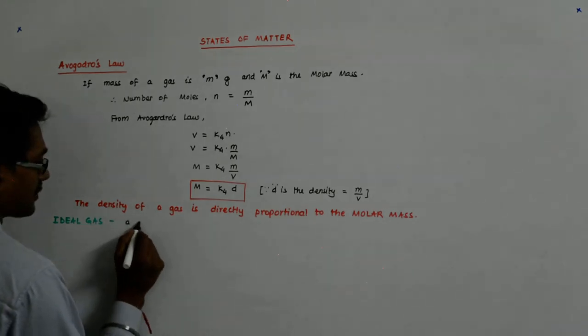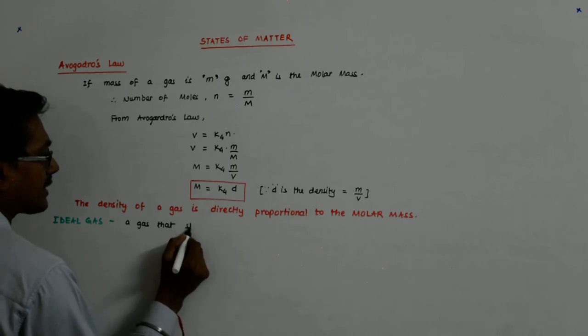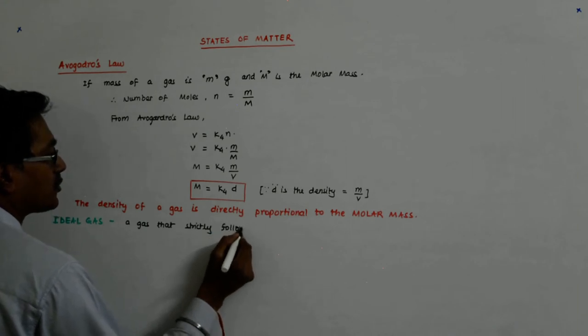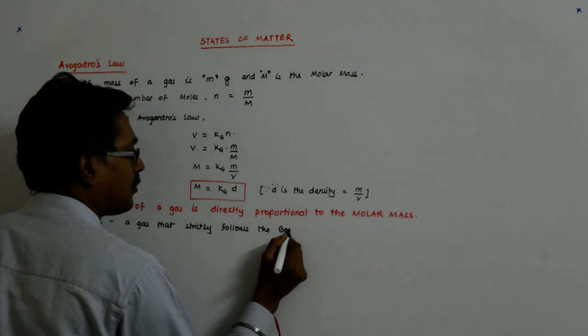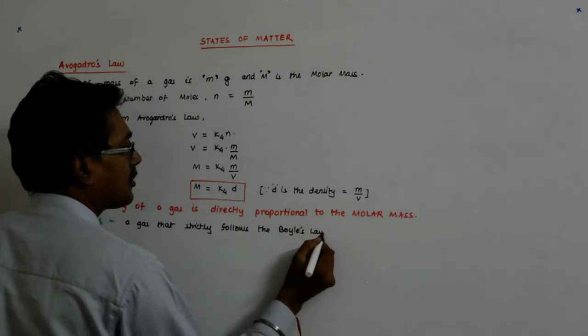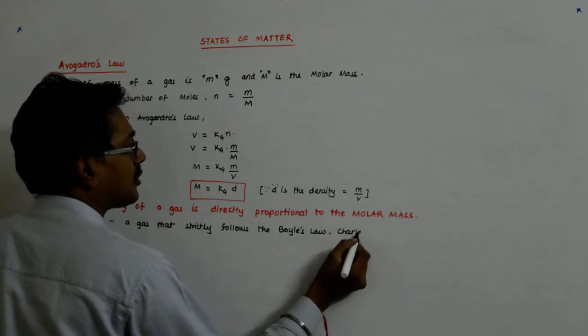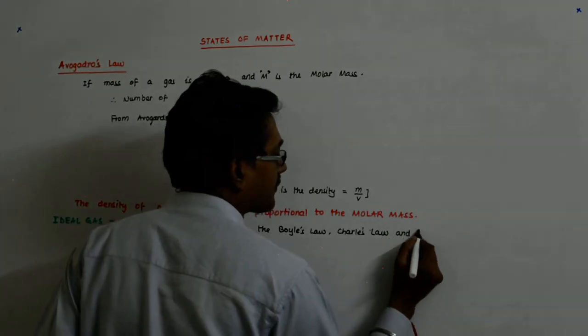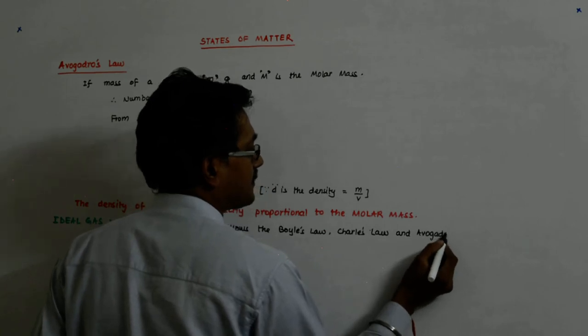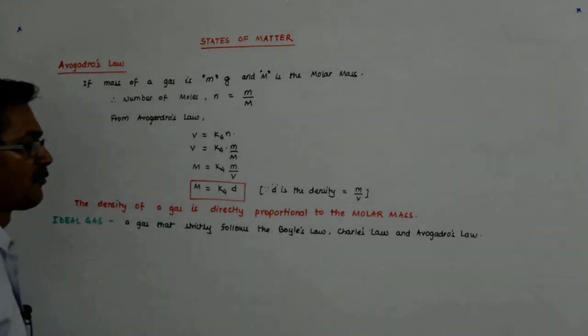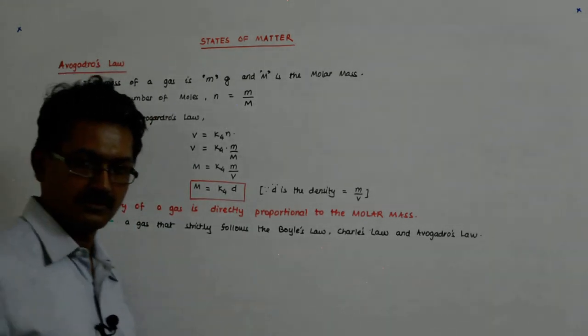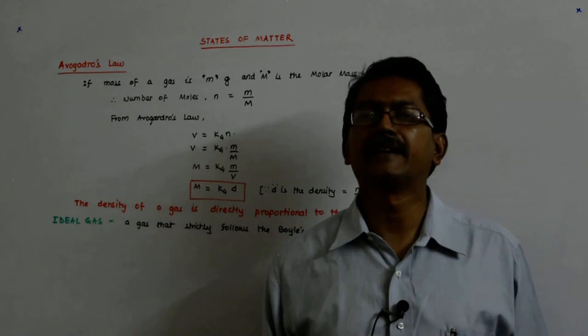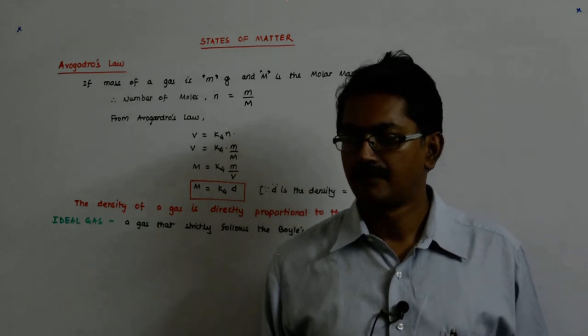An ideal gas is a gas that strictly, that strictly, that strictly follows Boyle's law and Avogadro's law. Why didn't I say Gay-Lussac's law? It should follow that. Why didn't I say that?